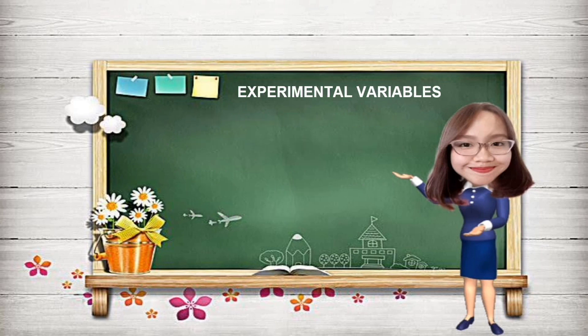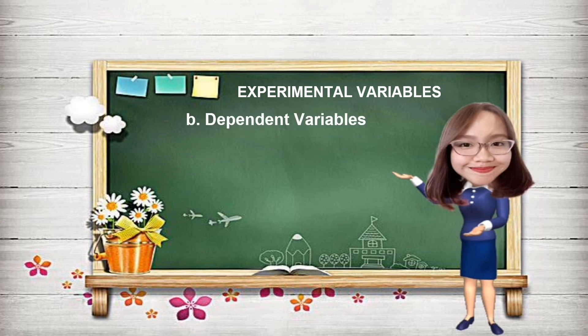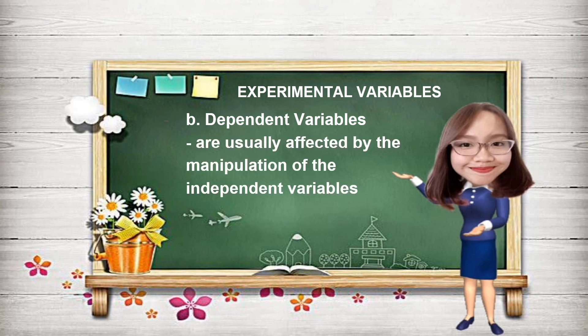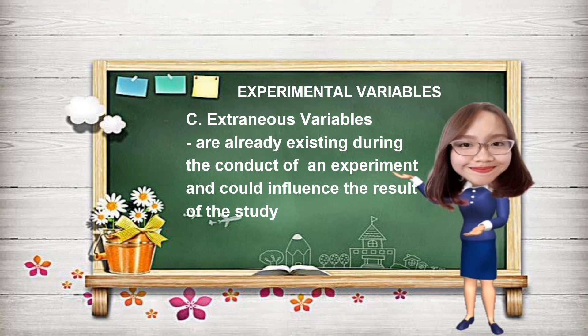Another classification of variables is experimental variables. Independent, dependent, and extraneous variables are under this classification. Independent variables are usually manipulated in an experiment, therefore it is also called a manipulated or explanatory variable. Dependent variables are usually affected by the manipulation of the independent variables; they are also called response or predicted variables. Extraneous variables are called mediating or intervening variables — these variables are already existing during the conduct of an experiment and could influence the result of the study. They are also known as covariate variables.